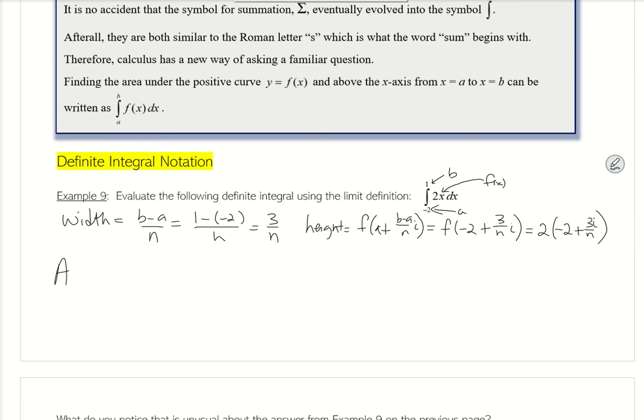I've already figured out b minus a over n, which is 3 over n times i. If I plug that into my f of x, which is 2 times that, it's going to be 2 times negative 2 plus 3 over n times i. So if you want, you can multiply that in or not. Okay, so now my area, of course, is the width times the length, and it's the limit as n goes to infinity of the summation of i equals 1 to n of 2 times negative 2 plus 3i over n times the width, which is 3 over n.